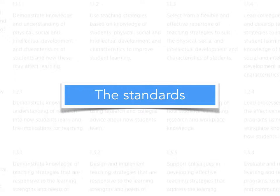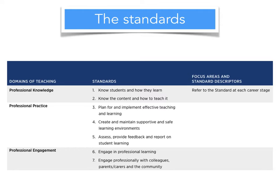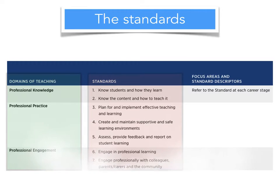It's important that you know a little bit about the standards and how they're arranged within the document. The standards are divided into different sections — divided into domains of teaching. These are the three areas that Boztest believes are critical to teacher quality and performance: professional knowledge, professional practice, and professional engagement. You can see that the standards are aligned with each of these domains.